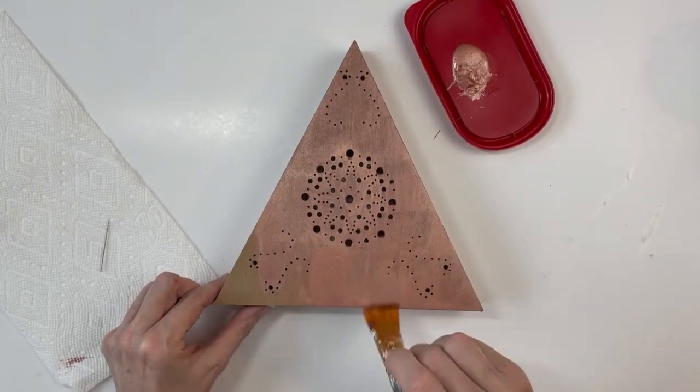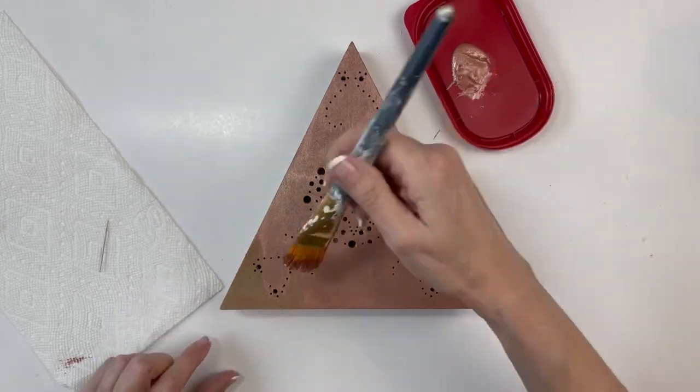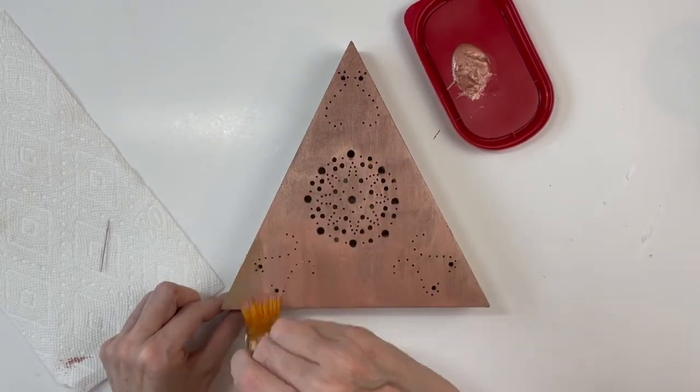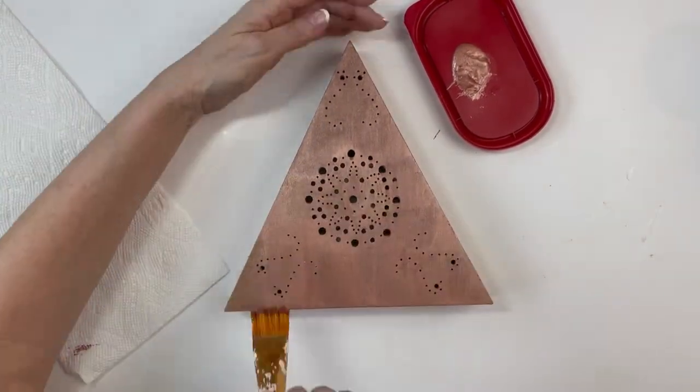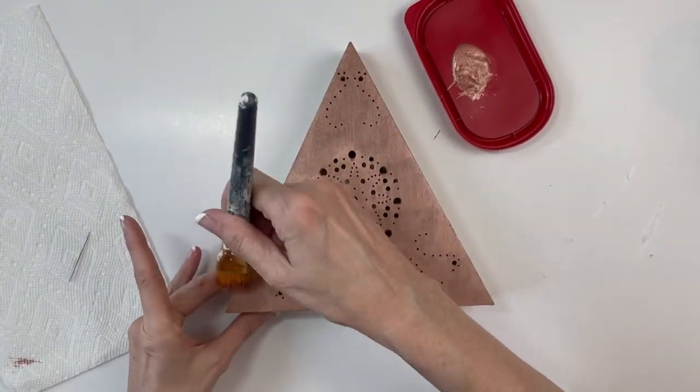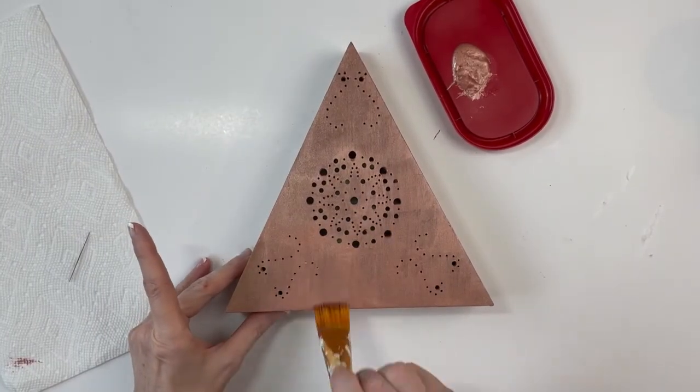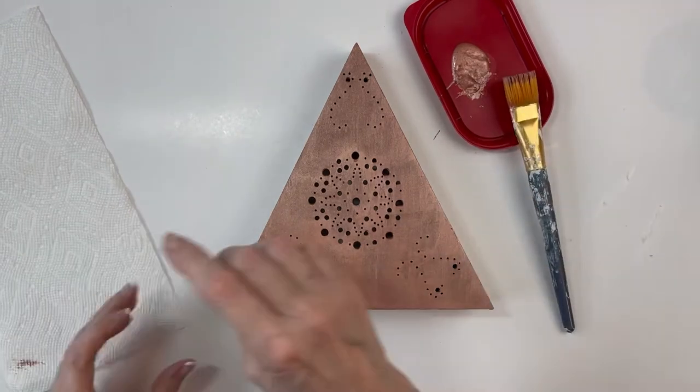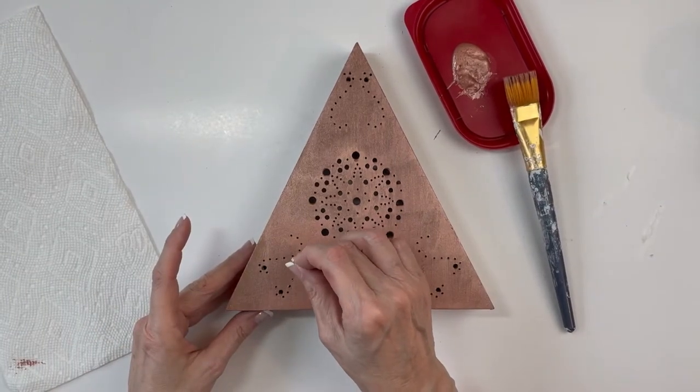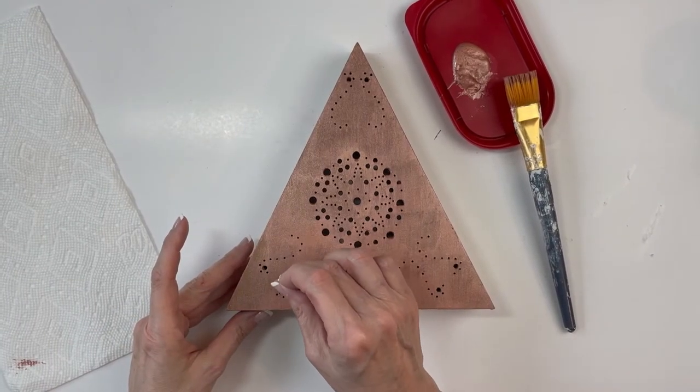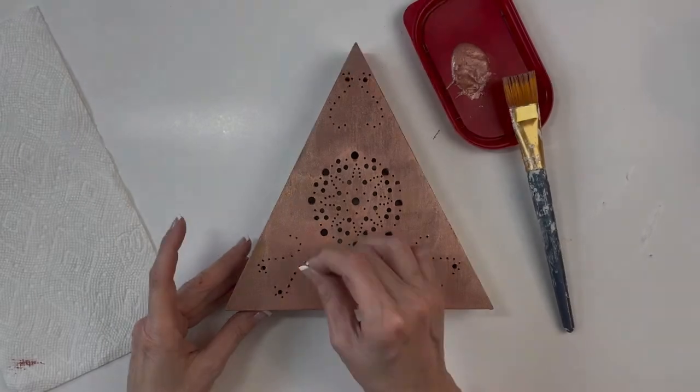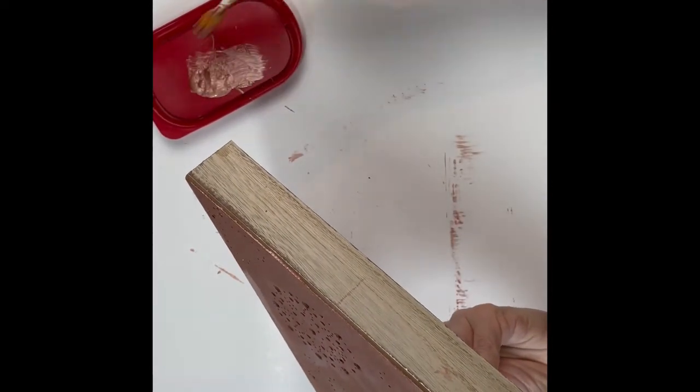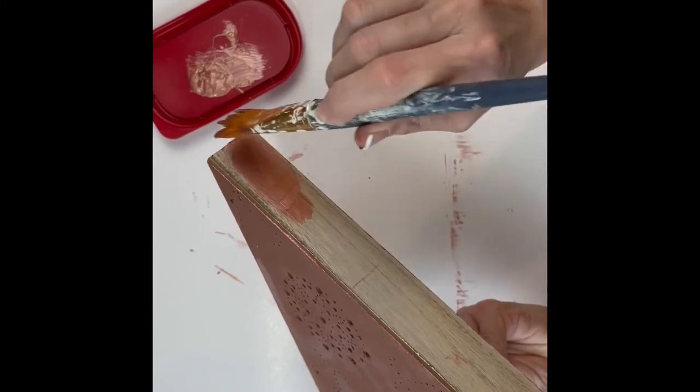This luminary actually required three coats of paint. When the front is completely dry, paint both sides and the bottom.